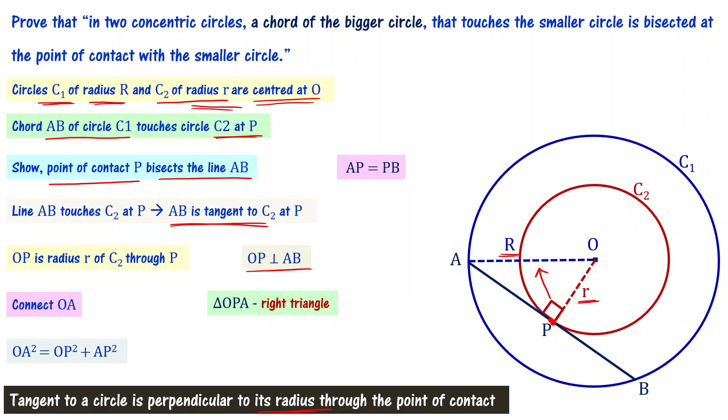OP is small r and OA equals capital R. AP square can be written as OA square minus OP square. We rearrange this equation, so AP square equals capital R square minus small r square.